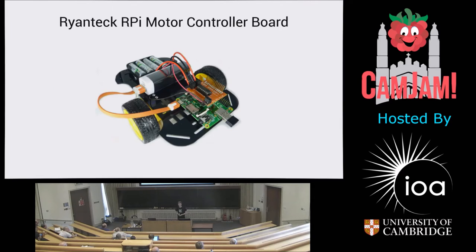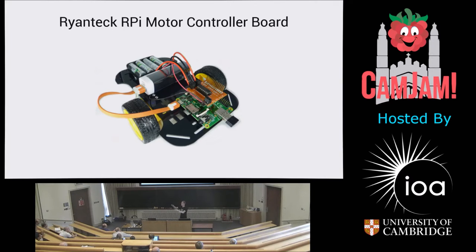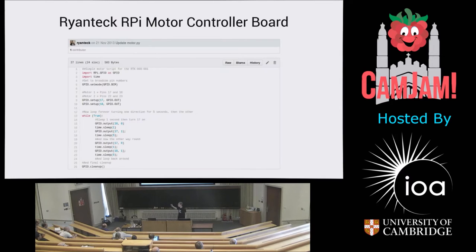Then things like this start coming out, which is kind of a step forward. Ryan created this little motor board, the RTK00001. There was no kind of API to this, but he provided a simple bit of Python code that said if you drive this pin high and this pin high and this pin low and this pin low, it will drive forward — you just needed to know which GPIO pin matched to which wheel in which direction. He provided this bit of code, which is fairly straightforward.